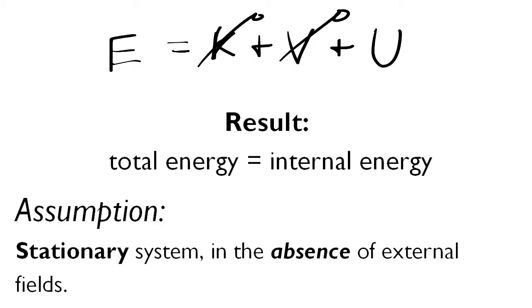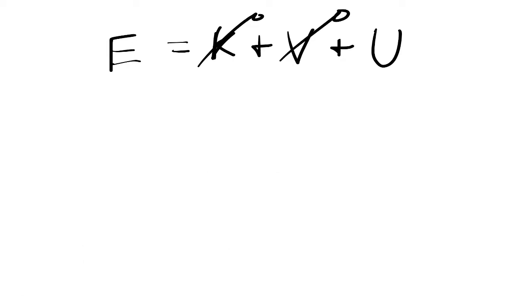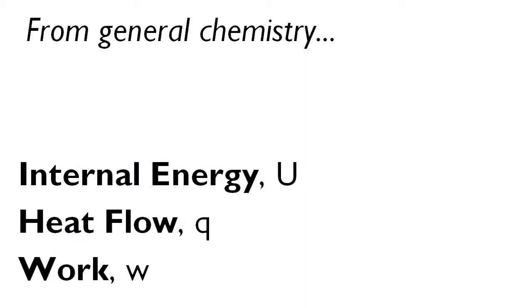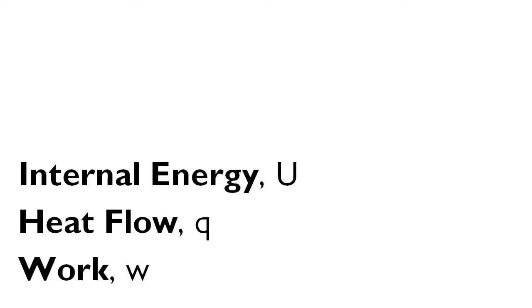When you write U, it involves the total energy in the system based on our assumptions. Usually when we talk about U, we consider U as for the system. In general chemistry you may have seen the first law of thermodynamics written in terms of the internal energy, the heat flow, and the work. We can think of the internal energy changing infinitesimally small. In that case you'd write dU is equal to delta Q plus delta W.